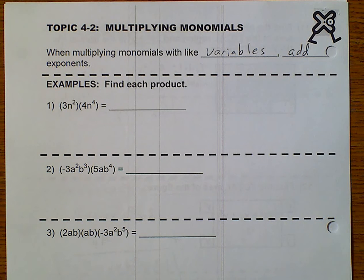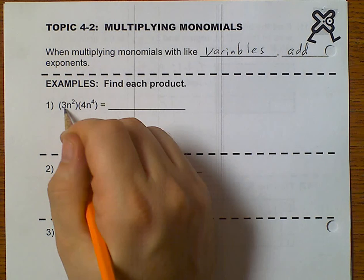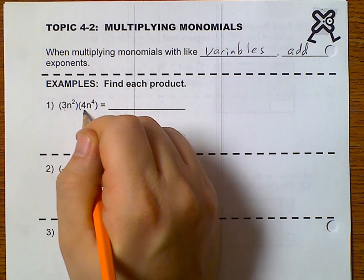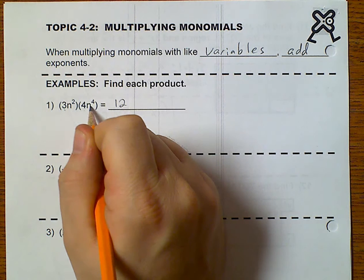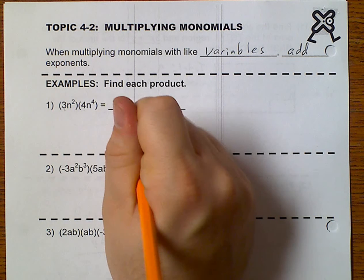So, let's go ahead and do this. Well, 3 times 4 gives me 12. And n squared times n to the 4th would be 2 plus 4 gives me n to the 6th.